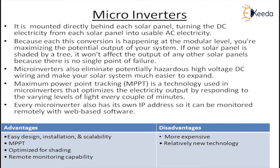MPPT tracking technology is also used in microinverters, optimizing electricity output by responding to varying levels of light every couple of minutes — it tracks the MPPT point accordingly. Every microinverter also has its own IP address, so it can be monitored remotely with web-based software, and remote monitoring and control is also possible because it is an IP-based system.